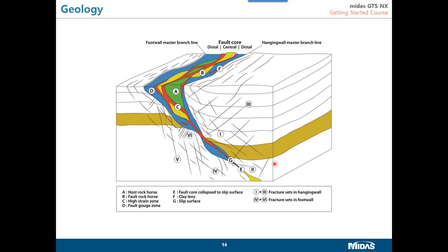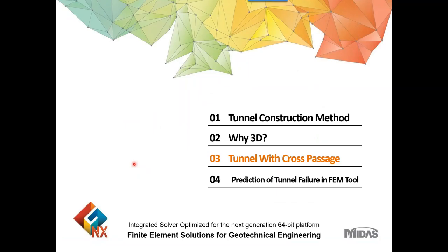Another area requiring 3D analysis is extreme geology. We can encounter lenses, fault folds, or joints creating a wedge that is vulnerable during excavation and may pass directly through your tunnel. In such cases it is always better to go for 3D modeling because these conditions cannot be simulated from a 2D point of view. That covers why 3D analysis is better, and now I will show you a tunnel with cross passage — how to model it in 3D, the excavation sequence, and the supports considered.